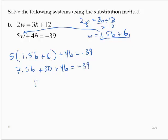Simplifying further, 11.5b plus 30 equals negative 39.